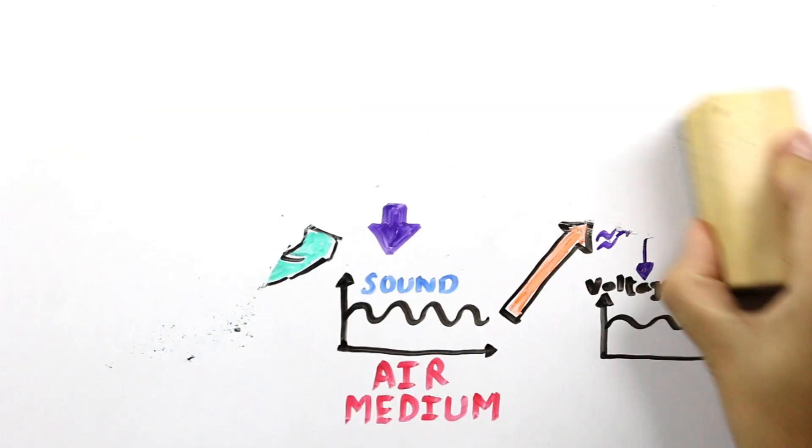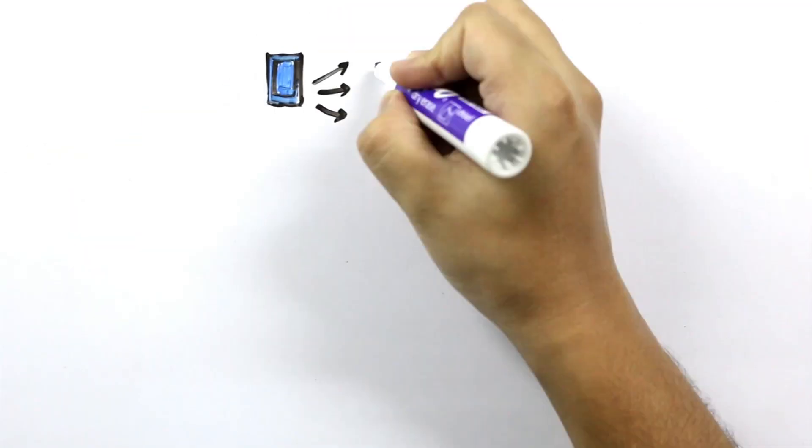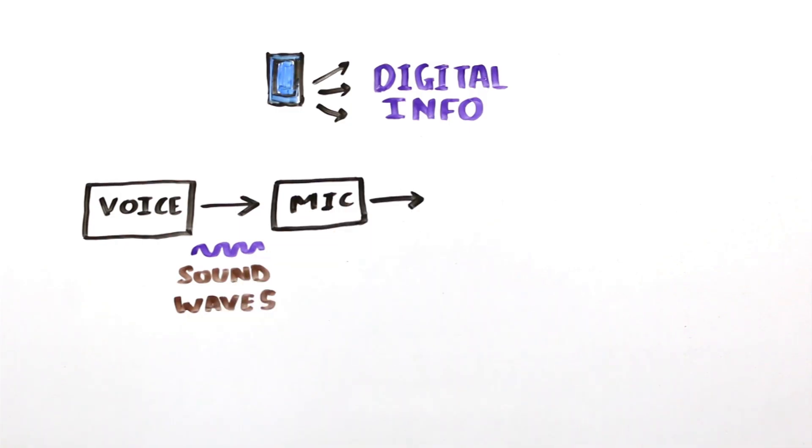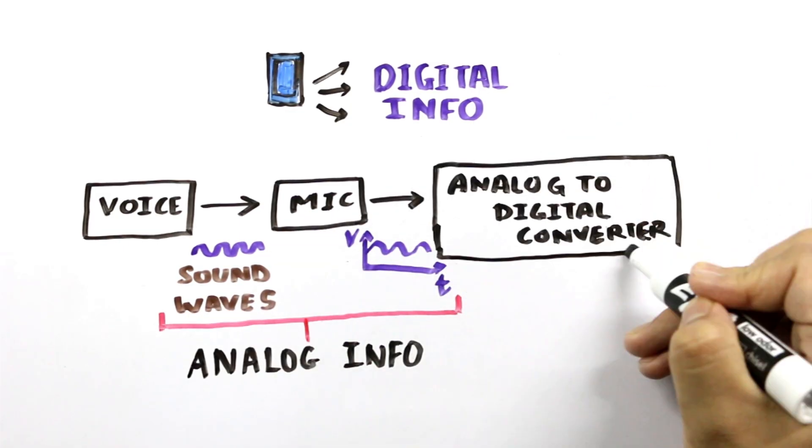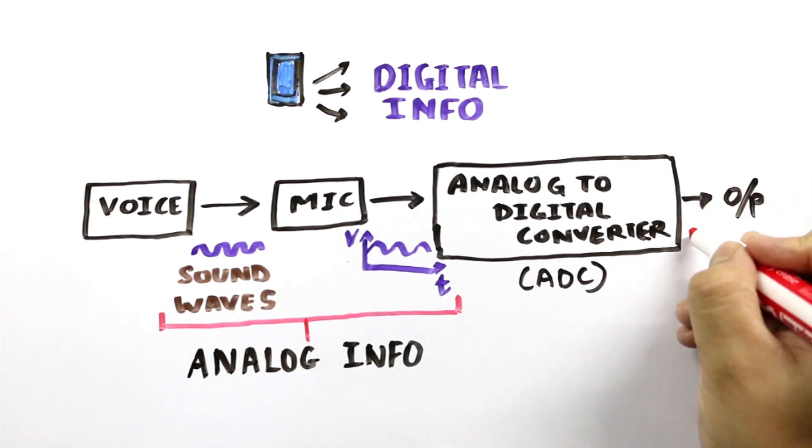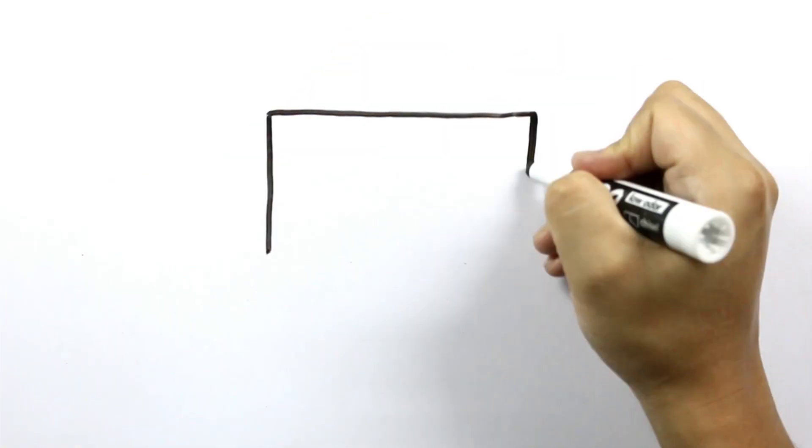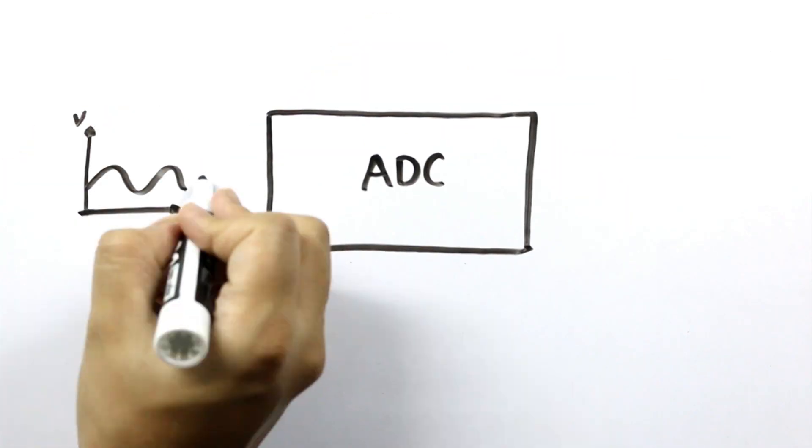They are analog information. A cell phone transmits sound in digital form, so those analog waves need to be converted into numbers. How does that happen? A circuit inside the phone, called an analog to digital converter, measures the size of the waves many times each second and stores each measurement as a number.